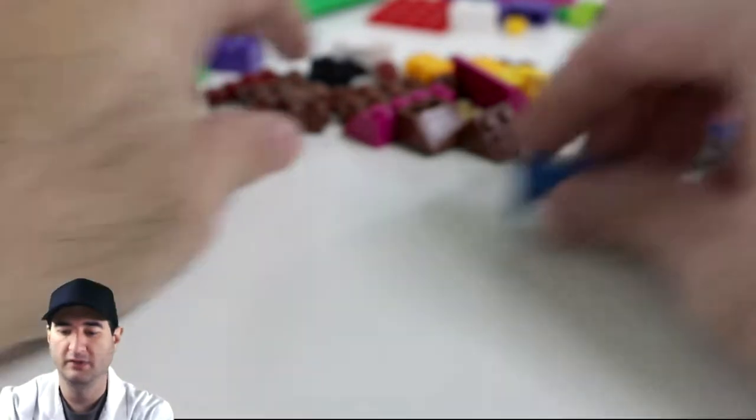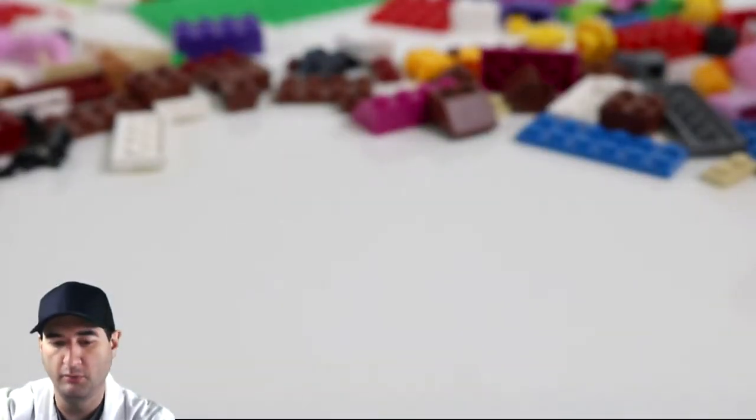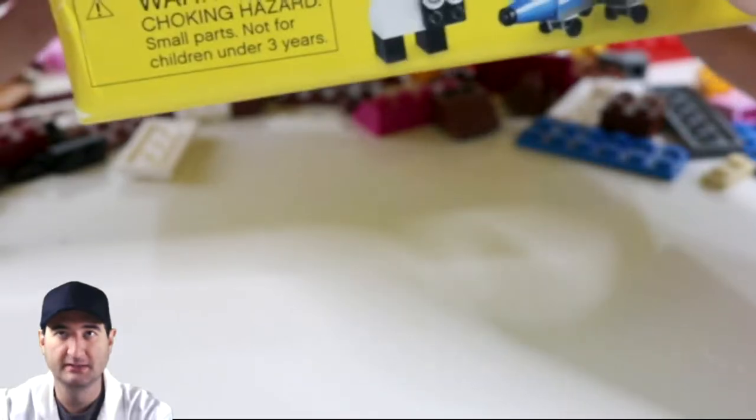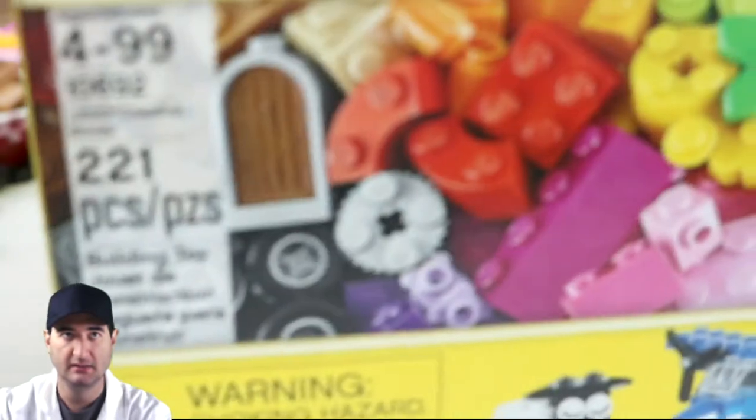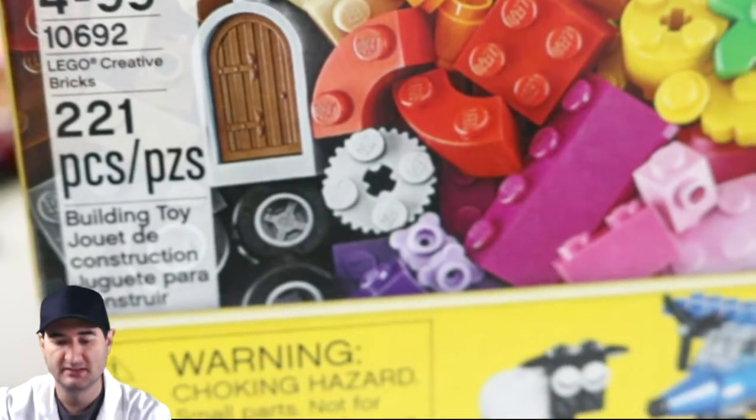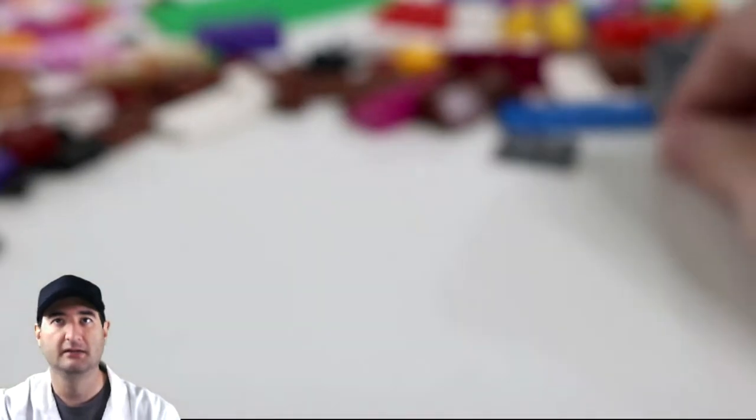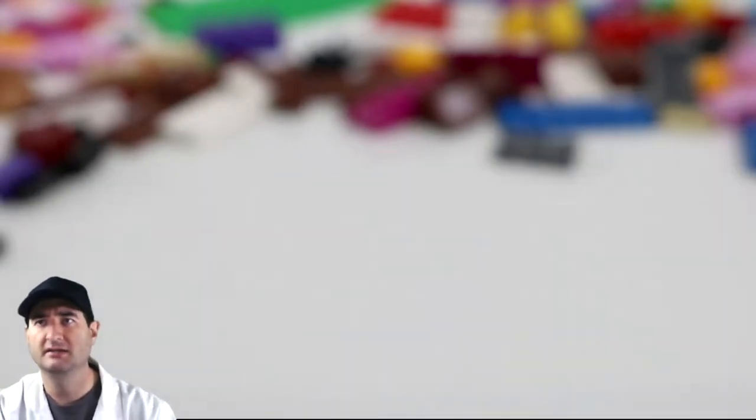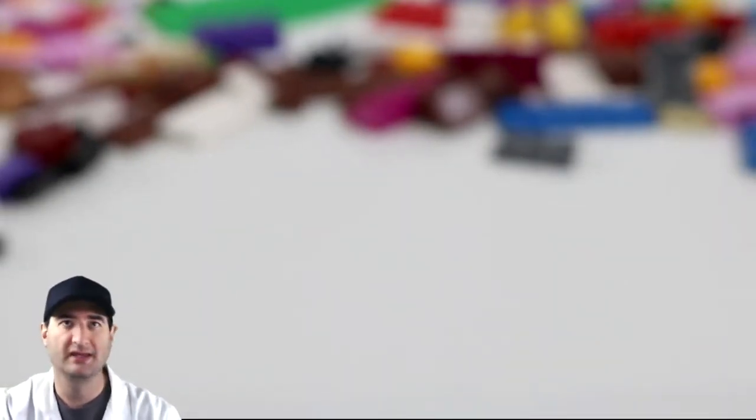Okay, we're here at Make Sure Daily where we make a bunch of things. Right now what we have is the Classic kit with 221 pieces, set number 10692. We're going to build a whole bunch of stuff out of LEGOs today and it's all going to be Thanksgiving themed.